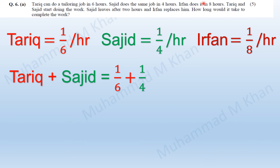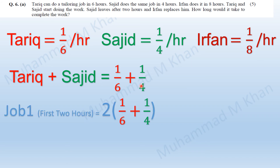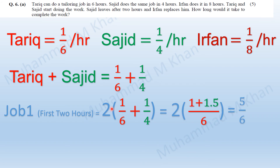The question says that Tariq and Sajid start doing work together. The sum of their work rates is 1/6 plus 1/4, which is the ratio of Tariq's and Sajid's work respectively in one hour. To find how much they both do in 2 hours, we multiply the one-hour rate by 2. Taking the LCM and solving, the job done in 2 hours by Tariq and Sajid is 5/6.